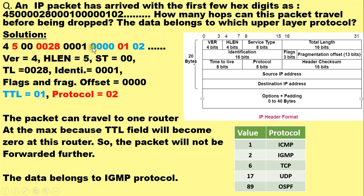The first hexadecimal digit corresponds to the version field of IPv4, specifying that version 4 is in use. The second hexadecimal digit corresponds to the 4-bit HLEN field. HLEN always specifies the header size in multiples of 4 bytes. Here the header size is 5 × 4 = 20 bytes, which is the fixed size of the IPv4 header.